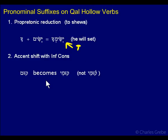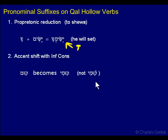The second point is something I just mentioned in the last module — accent shift with the infinitive construct. Qum, the infinitive construct, becomes qumi with the 1cs. The accent shifts to the end, as opposed to qumi. Qumi is the feminine singular imperative, so it's the accent shift that tells the two apart.